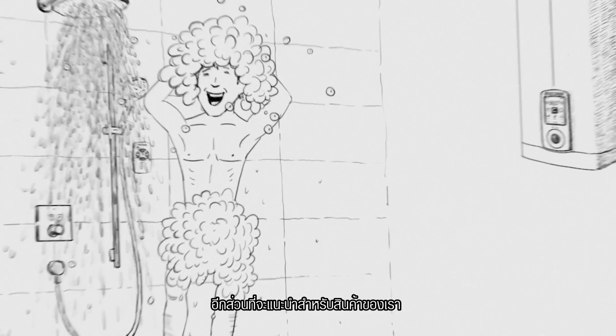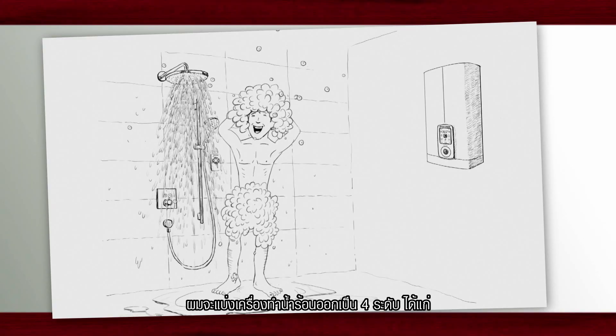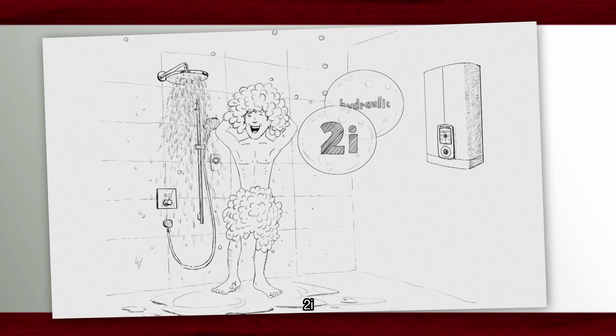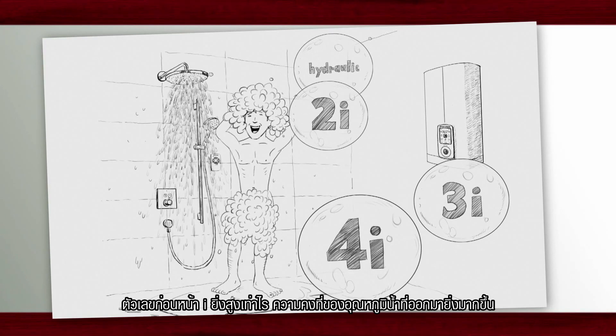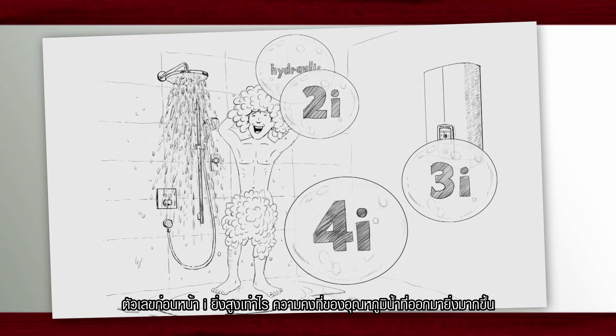To guide you through our wide product range we have divided our hot water solutions into four comfort levels: Hydraulic, 2i, 3i and 4i. Basically the higher the number before the eye, the more stable the outlet water temperature.